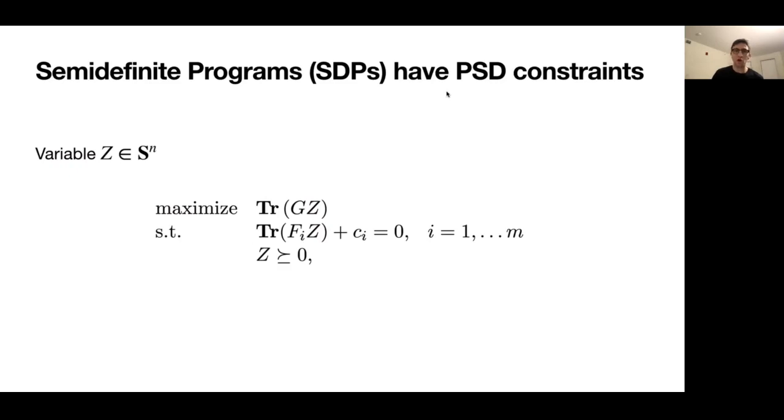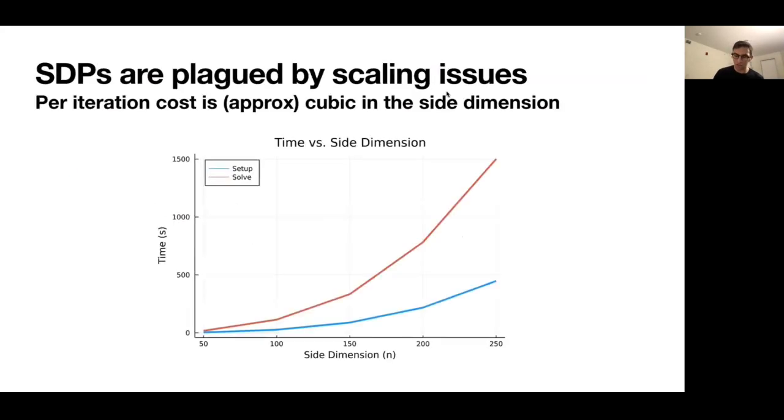Unfortunately, though, these things aren't used that much in practice, largely due to scaling issues. And this is due to the fact that most general purpose solvers have a per iteration cost that's approximately cubic in the side dimension. And so what this means in practice is that for even modest problem sizes, n in the few hundreds where n is the side dimension, the solve time scales quite dramatically, rendering these entirely impractical for general purpose solvers for very large problems. And what this means is we need to take advantage of some type of additional structure in the SDPs that we want to solve.